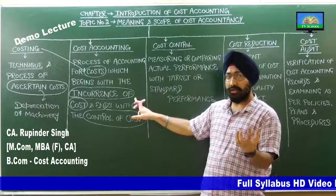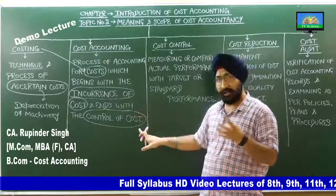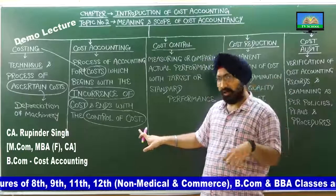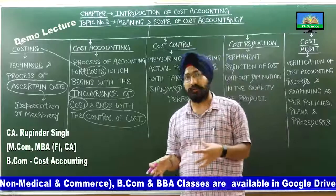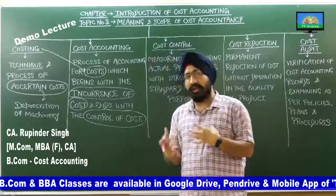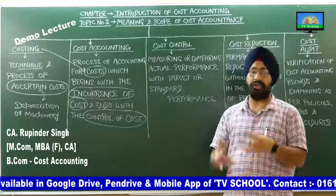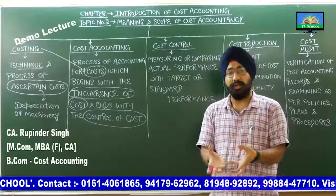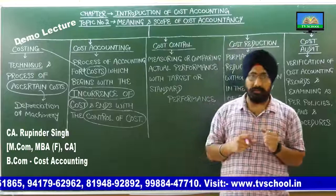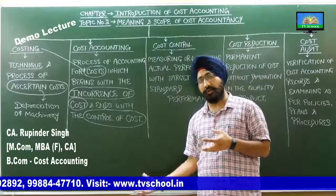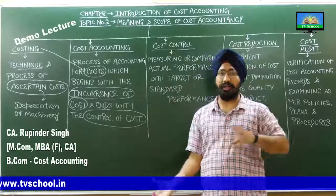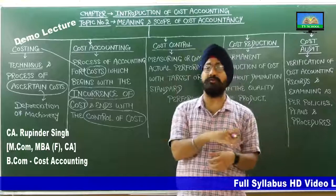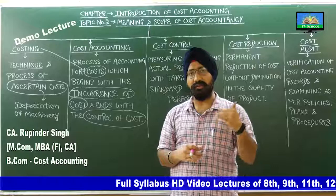जैसे Tata ने Nano car बनाई — Nano बनाने से लेकर उसके बिकने तक — क्या उतनी sale हो पाई जितनी Tata ने expectation की थी? नहीं हो पाई। तो अगर आपने cost accounting की होगी, तभी आपको पता लगेगा कि results favorable आए या unfavorable। अगर आपने data ही नहीं बनाया, तो favorable और unfavorable find out करना possible नहीं। Cost accounting में सारी books of accounts में cost को incurrence से लेकर control तक maintain करना है।